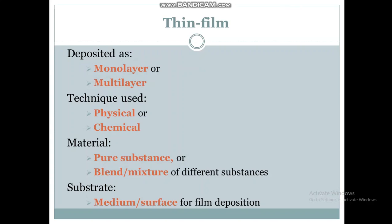The techniques used for deposition of thin film may be physical or chemical techniques. The material used may be a pure substance or a blend or mixture of different substances. The substrate is the medium or surface that provides adsorption of the thin film — it is the surface on which the thin film is deposited.